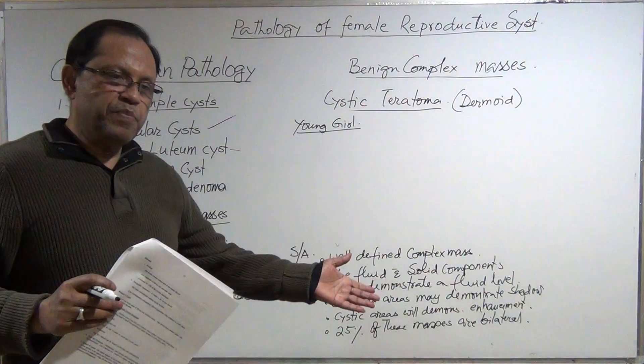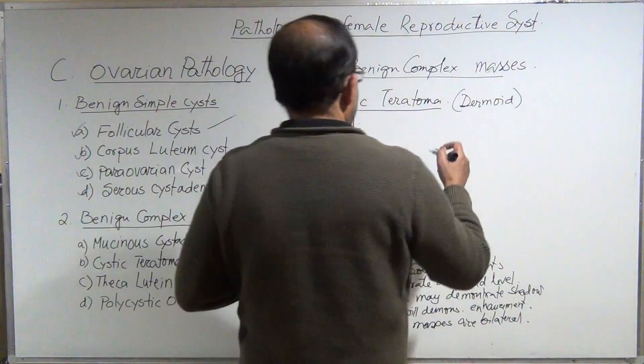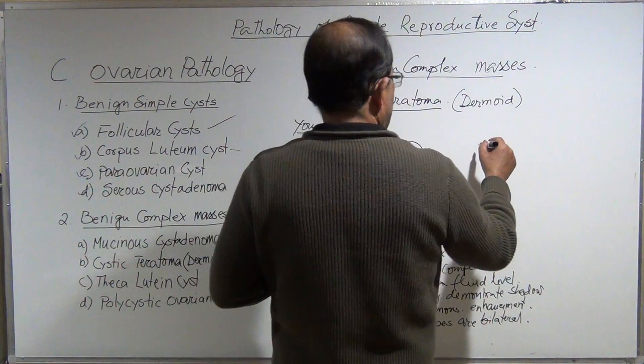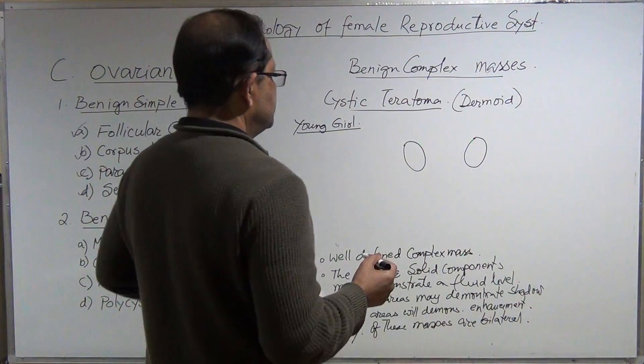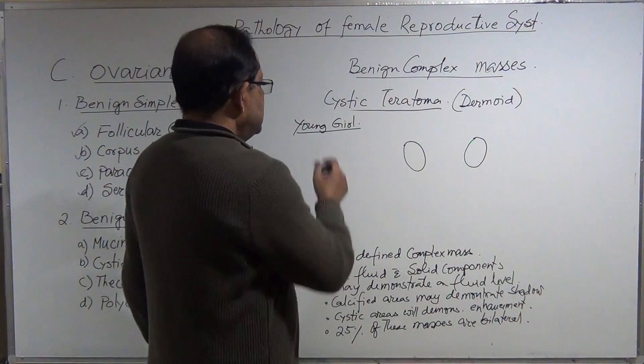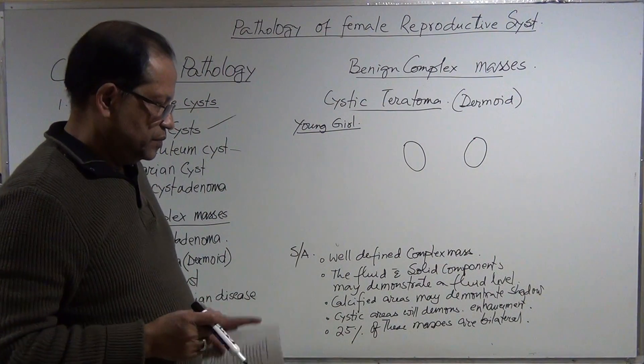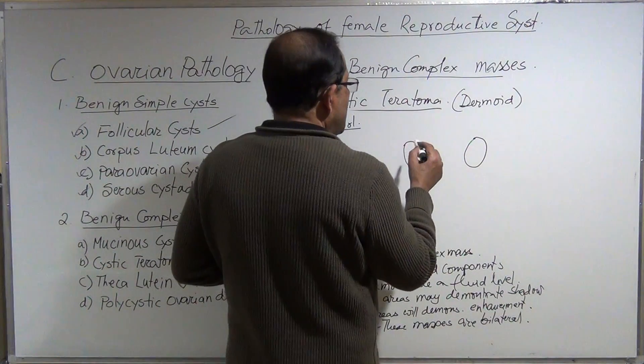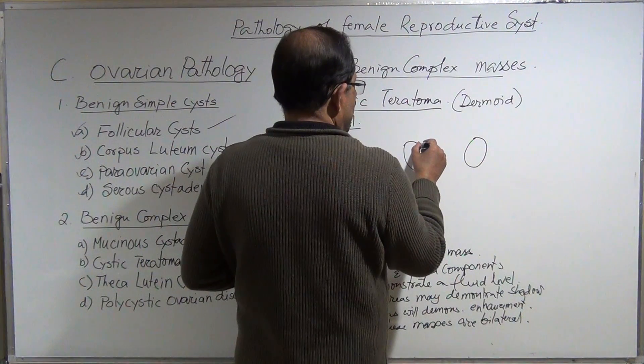Seventy-five percent are unilateral. If this is one ovary and this is another ovary, this girl has no baby yet and she found that one of the ovaries has a dermoid.